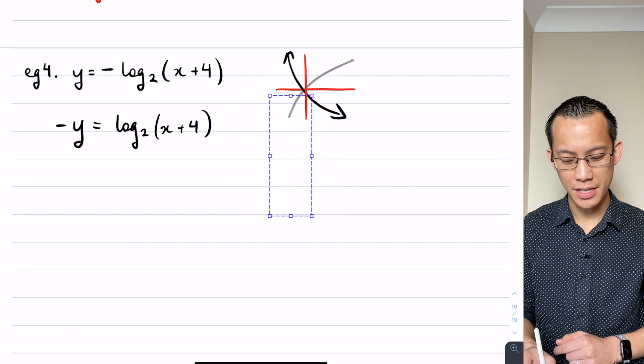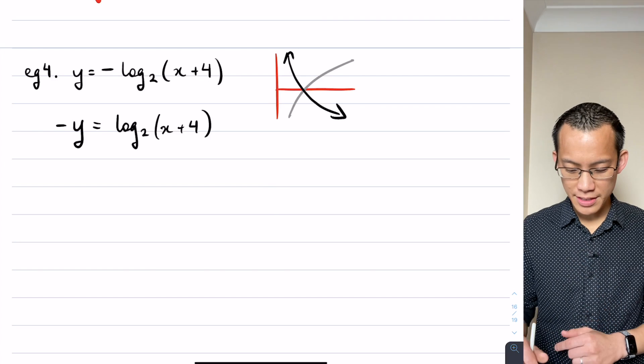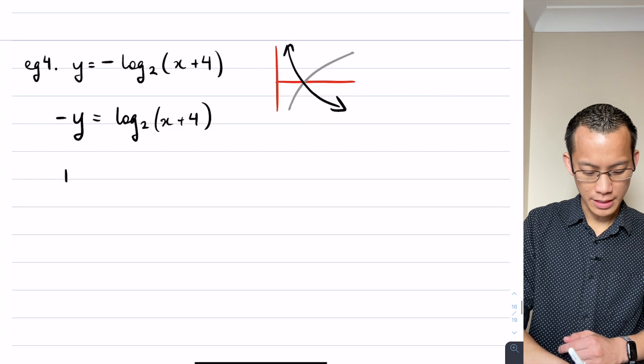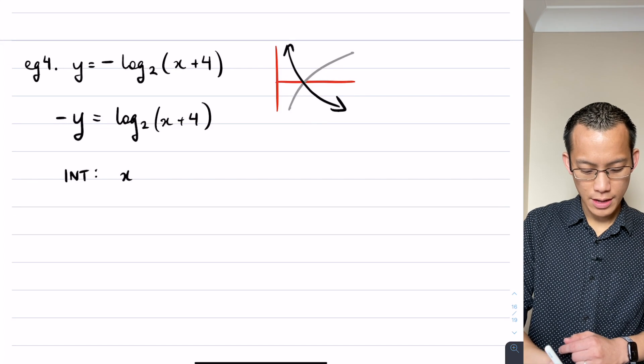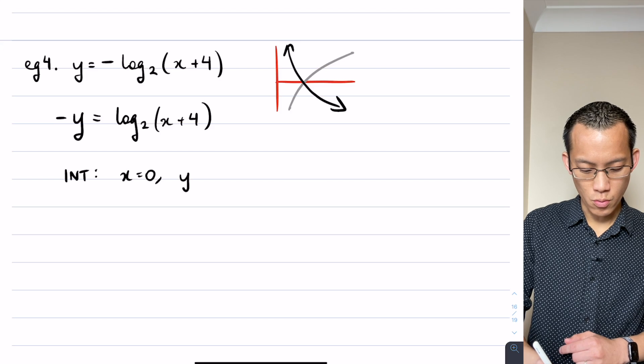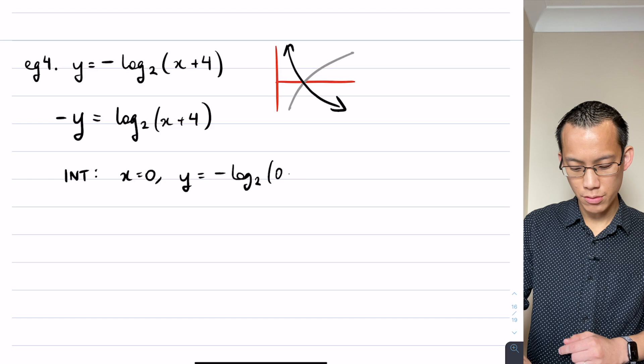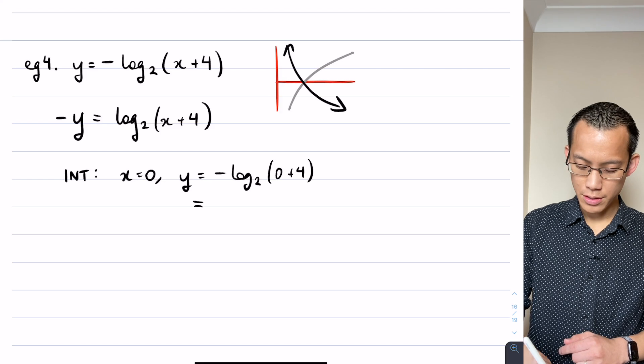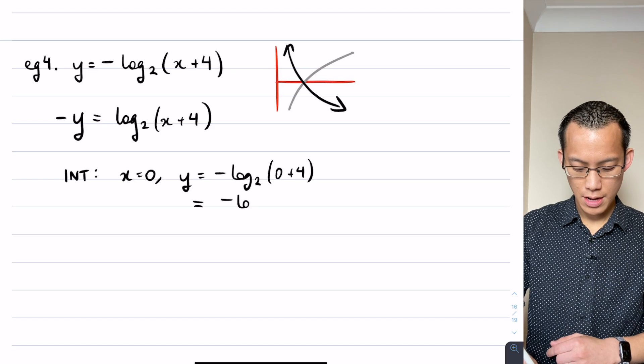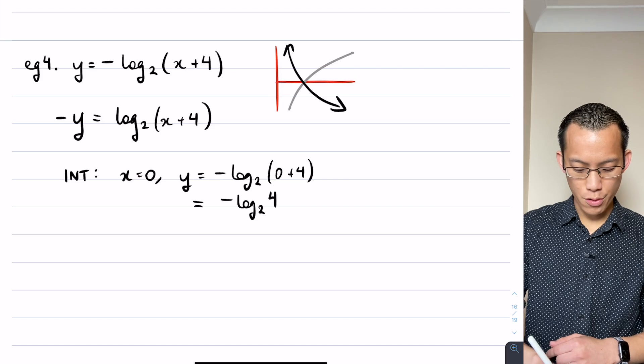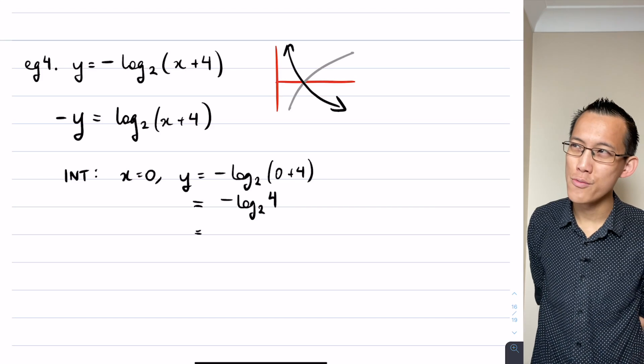Okay, so let's start to get all the pieces together. Let's work out the intercepts. When x equals 0, y is going to be negative log base 2 of 0 plus 4, so negative still out there on the front, log base 2 of 4. What is the number that when you raise 2 to that power you get 4?